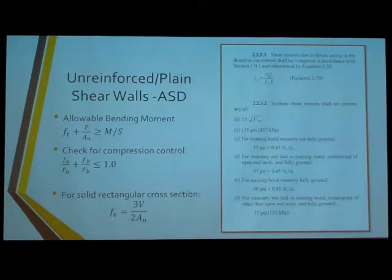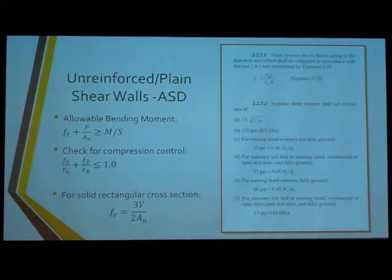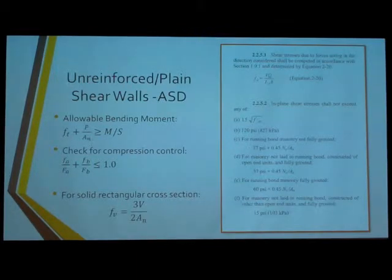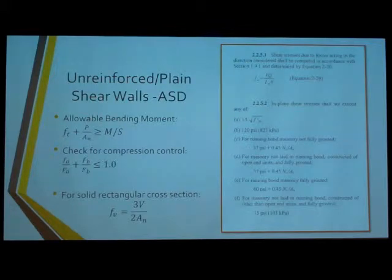When designing the shear wall for unreinforced using the allowable stress design method, you want to make sure it's sufficient in bending moment and check for compression control like you would with a normal wall. When it comes to shear, you have this equation to calculate the shear stress. It's an iterative process — pick a design that works, and if it doesn't, pick a new size.